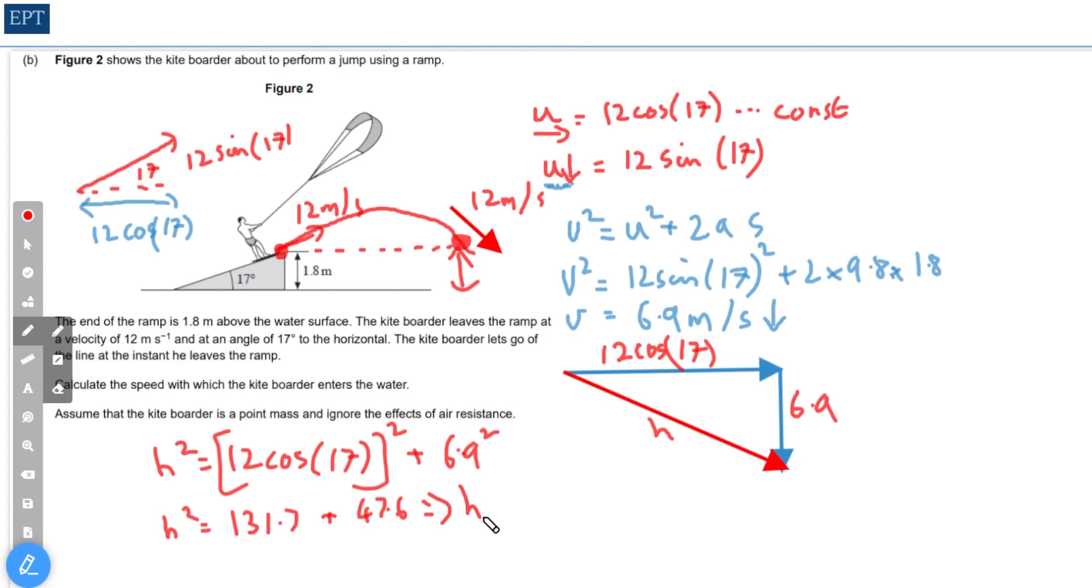Add those together and take the square root, therefore h is going to be 13.4. Now remember that looks like h for height, but it isn't really. It's the velocity which is entering the water. So final velocity is 13.4 meters per second.